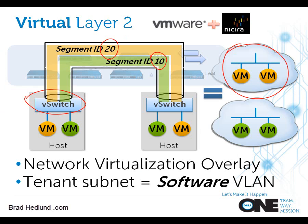Nicira helps VMware accomplish that in a way that works on any network — not just a big massive layer 2 network that you build with chassis switches. Any network: layer 2, layer 3, OpenFlow, I don't care. As long as I've got IP connectivity from this host to that host — let's say one is .1 and the other is .7 — as long as I can pass packets from .1 to .7, we're good.